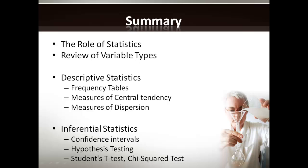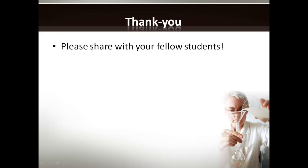To summarize what we've discussed today: the role of statistics including its limitations, and a quick review of different variable types. We've gone into descriptive statistics including frequency tables, measures of central tendency, and measures of dispersion. We've then gone on to discuss inferential statistics including confidence intervals, hypothesis testing, and two commonly used statistical tests: the Student's t-test and the chi-squared test. Thank you very much for listening to this online lecture — please share this with your fellow students and post any comments if you have questions.